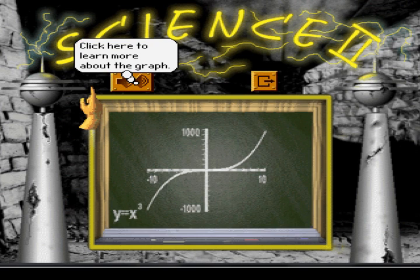This is a graph of the equation y equals x cubed. Here, negative values of x give negative y's. That's because when a negative number is cubed, the result is negative.